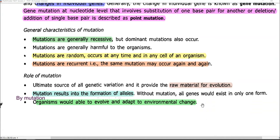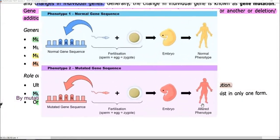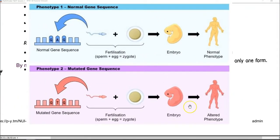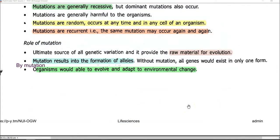The next part is related to the role of mutation in the organism. Mutations serve as an ultimate source of genetic variation — that is, mutation serves as genetic material for the process of evolution to occur in organisms. Mutation results in the formation of alleles; without mutation, most genes will be present only in a single form. Mutation is the one which makes organisms evolve and adapt to the constant environmental changes that occur in the environment.